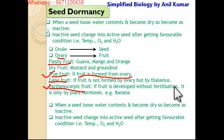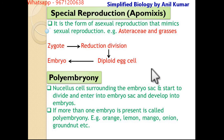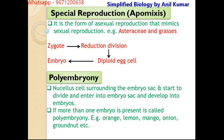When a seed loses water contents and becomes dry, it becomes inactive. It becomes active again when it gets good temperature, oxygen, and water. There are other different types of reproduction under the heading of special reproduction — one is called apomixis. It is a mimic form of sexual reproduction but in reality it is asexual reproduction. Examples include Asteraceae and grasses.